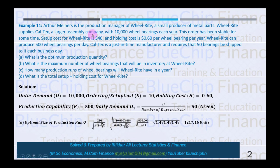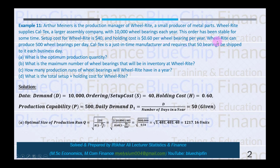Arthur is a production manager of Wheelwright, a small producer of metal parts. Wheelwright supplies Caltex, a larger assembly company, with 10,000 wheel bearings each year. This order has been stable for some time. Setup cost for Wheelwright is $40 and holding cost is $0.60 per wheel bearing per year. Wheelwright can produce 500 wheel bearings per day. Caltex is a just-in-time manufacturer and requires that 50 bearings be shipped to it each business day.